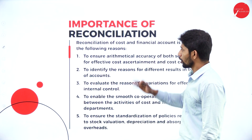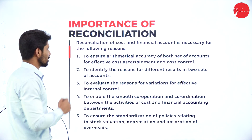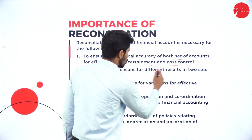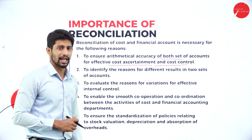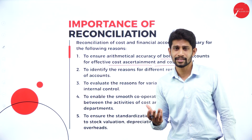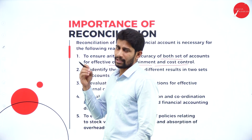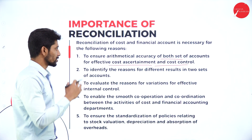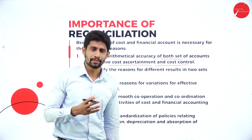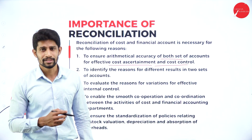Moving further — importance of reconciliation. Why are we supposed to do this reconciliation? First: to ensure arithmetical accuracy of both sets of accounts for effective cost ascertainment and cost control. We should be very careful with numbers. If something happens with your profit or loss, we might face some legal action. Arithmetical accuracy is very important in our financial accounts as well as cost accounts. Cost ascertainment is nothing but allocating funds to different departments or controlling the funds, and this reconciliation statement helps us for that purpose.